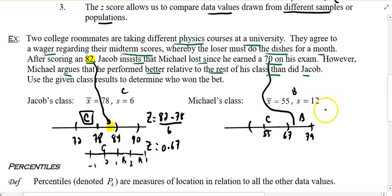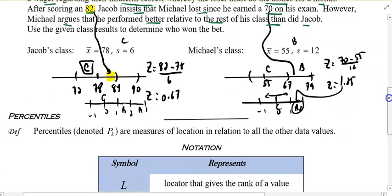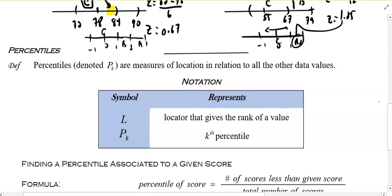If I take Michael and I figure out his z-score, I'll take his 70 score minus 55 divided by 12. That tells me he gets a 1.25, which means he's in the B range. So a z-score is a lot faster, and I could compare scores from different populations compared to how they did based on their scores.